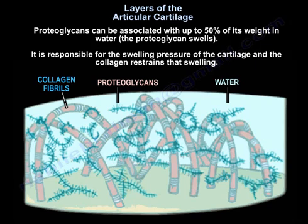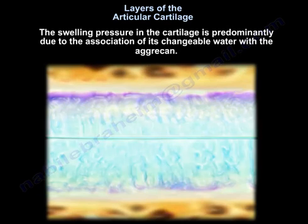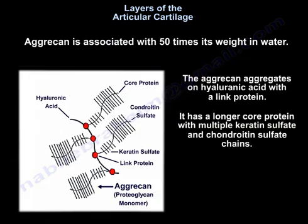The proteoglycan can be associated with up to 50% of its weight in water. The proteoglycan swells and is responsible for the swelling pressure of the cartilage, while collagen restrains that swelling. The proteoglycan attracts water because of its long chains of negative charges, and that fluid pressure provides strength in compression. The swelling pressure in the cartilage is predominantly due to the association of exchangeable water with Aggrecan. Aggrecan associates with 50 times its weight in water and aggregates on hyaluronic acid with a link protein, having a long core protein with multiple keratan sulfate and chondroitin sulfate chains.